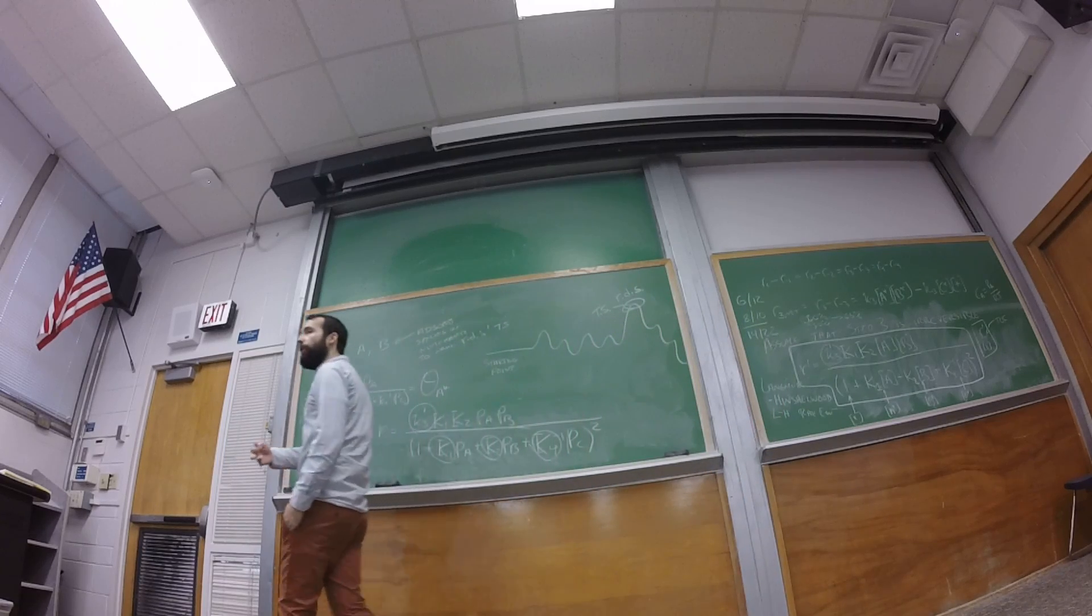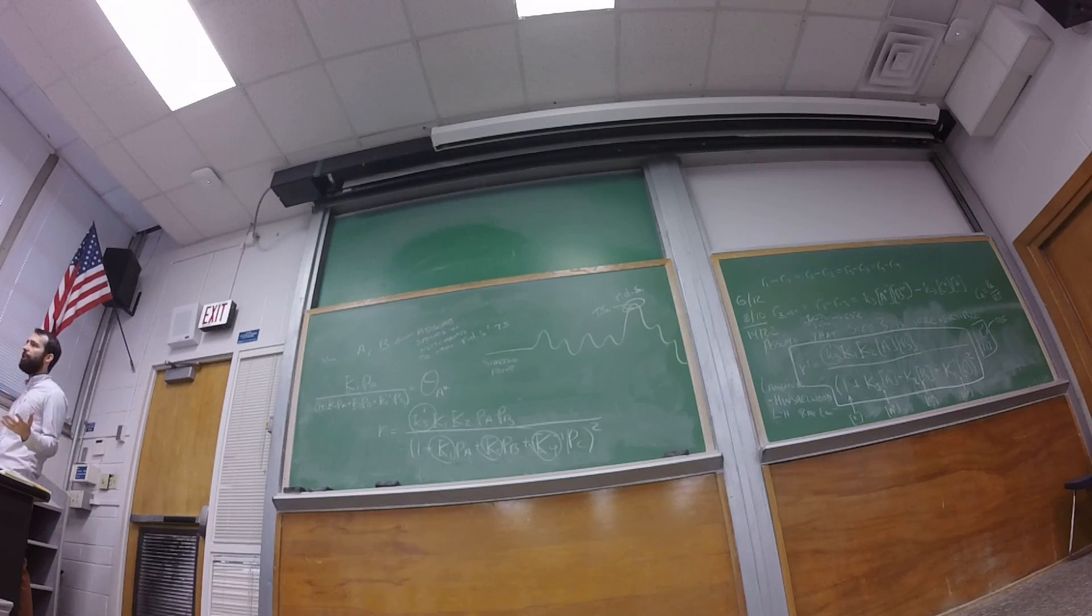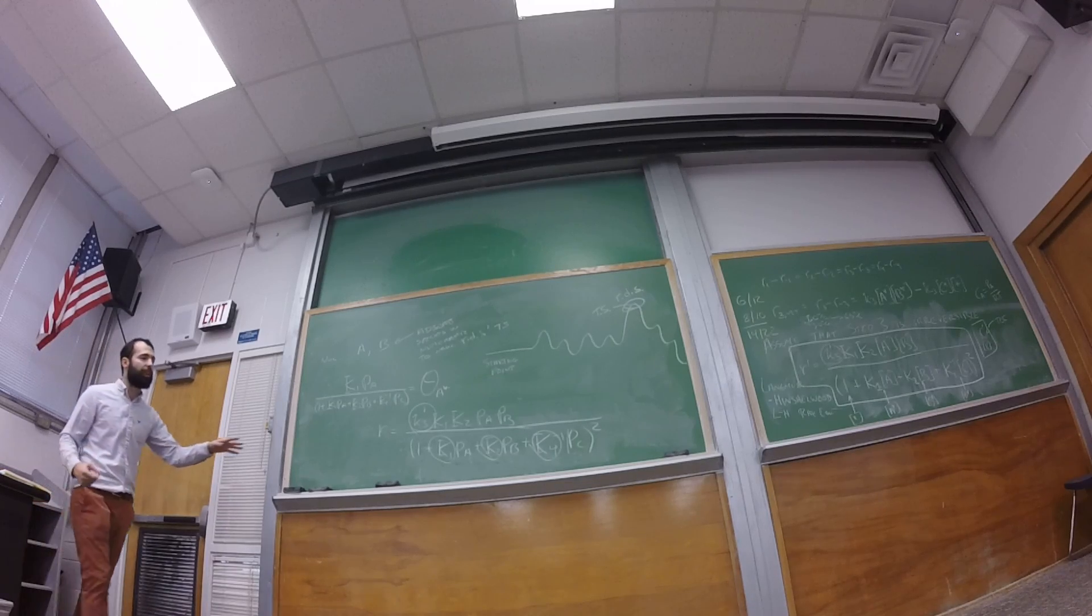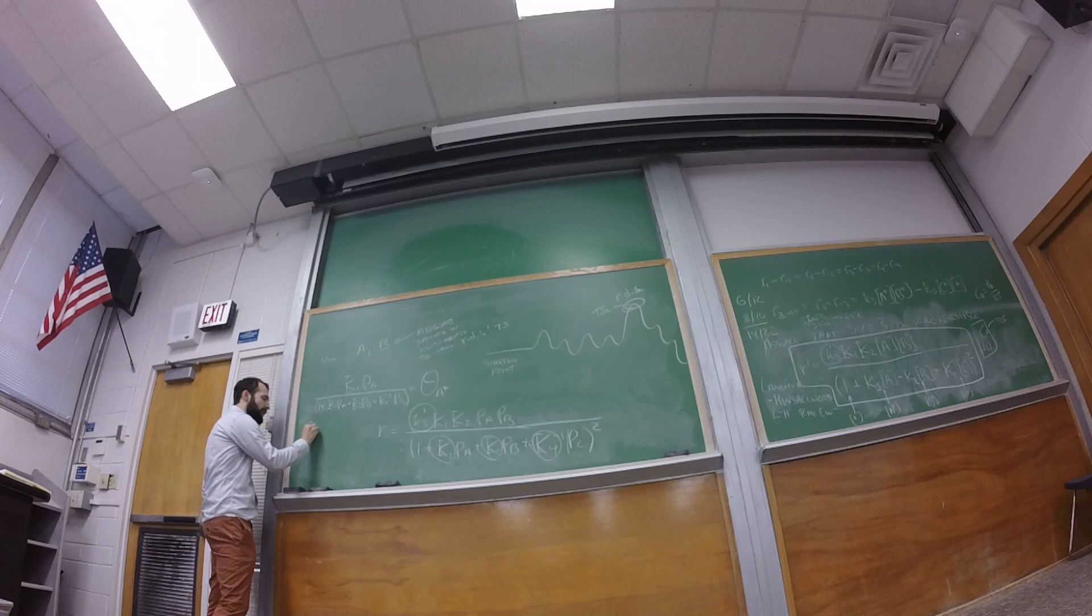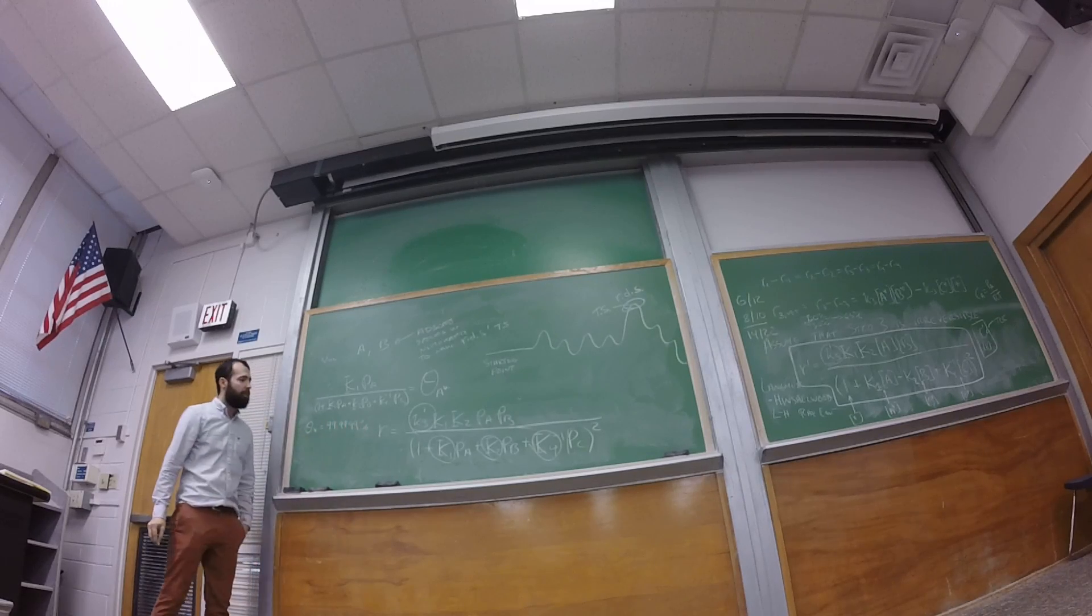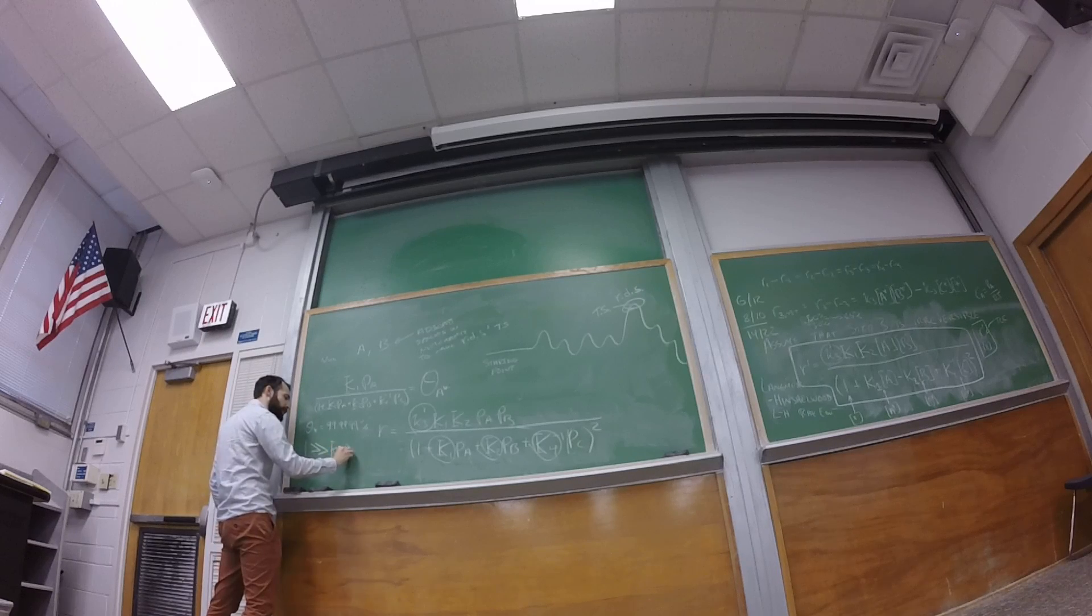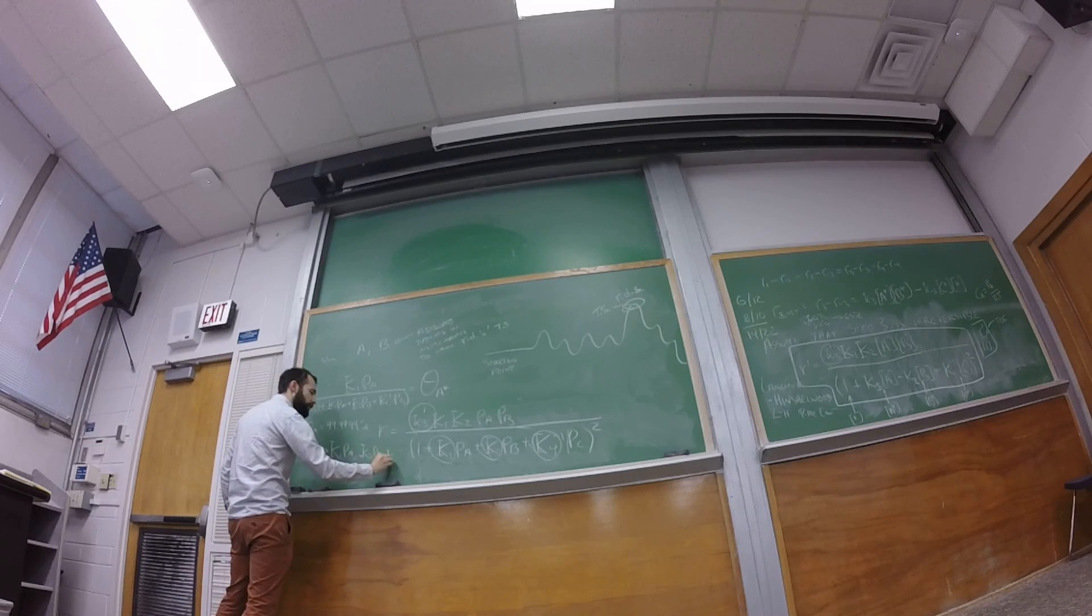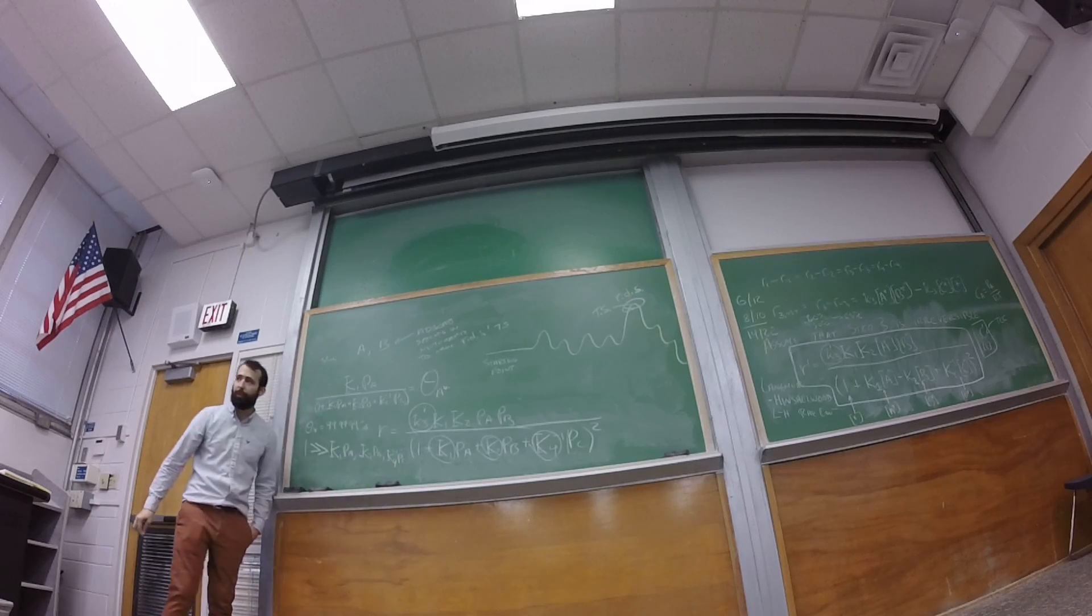So when I do a reaction, are all of those species on the surface? Yeah, I mean that's the only way I can do the reaction. I've got to make A star, B star, and C star. So they all have some coverage, but are they all large enough to make a difference in my predicted rates? What if I have a system where the coverage of vacancies is 99.9999%? In other words, that's saying that one is much, much larger than K1 PA or K2 PB or K3.